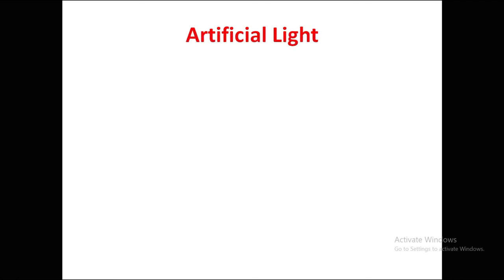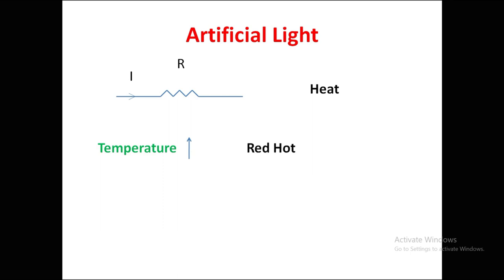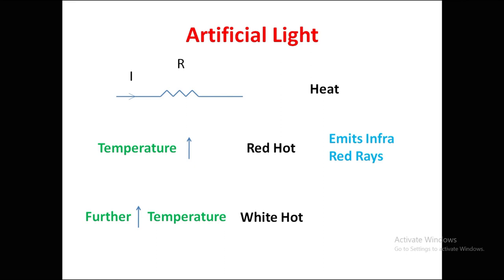Artificial light can be generated by taking a resistor R and allowing current to pass through it, which produces heat energy. If we increase the temperature of the resistance, it reaches a red-hot condition and emits infrared rays. By further increasing temperature, it also emits ultraviolet rays, and in between these two we get visible light. This is how artificial lighting is created.